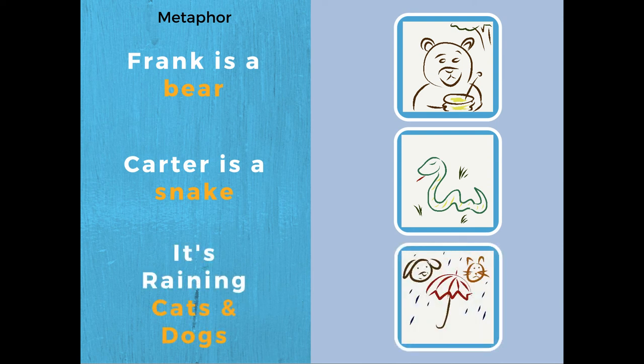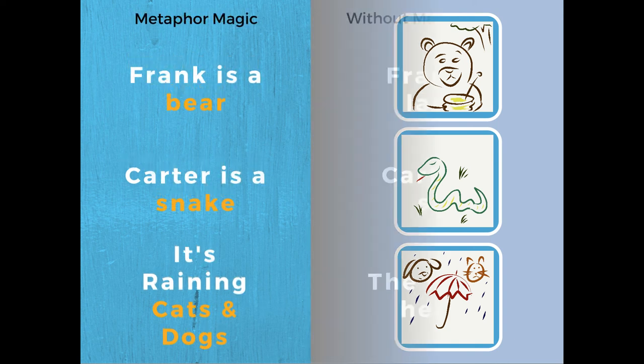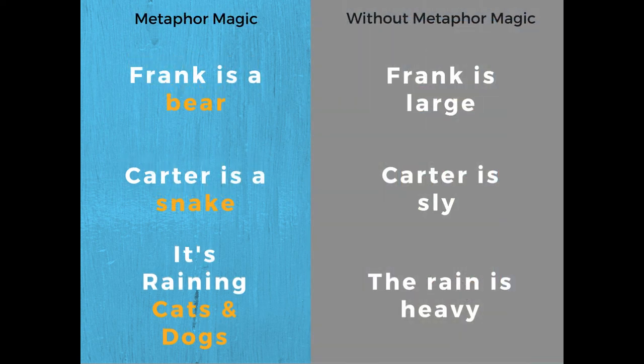Our third example of a metaphor is the classic saying: 'It's raining cats and dogs.' Without saying anything else about the rain, the reader immediately pictures heavy rain in their mind. As you can see in all three examples, since we used metaphors, we did not have to explain that Frank is large, Carter is sly, and the rain is heavy — we allowed the magic of the metaphor to paint a picture for the reader.